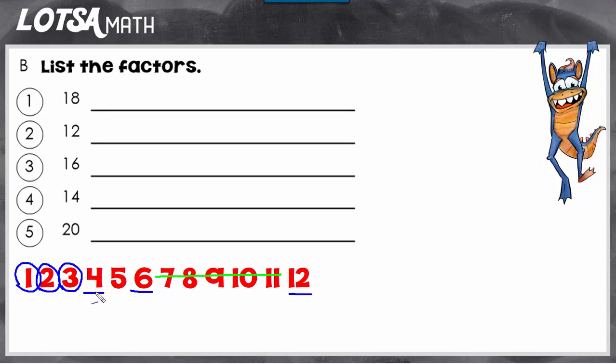And now I have met up with my underline digits, and so I know I'm done. So the factors of 12 are 1, 2, 3, 4, 6, and 12.